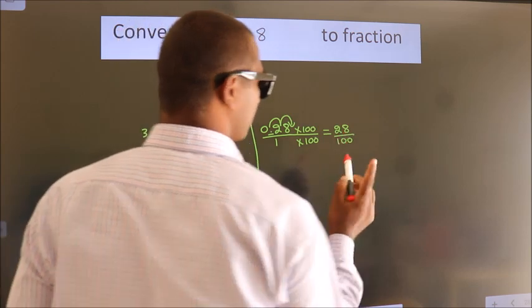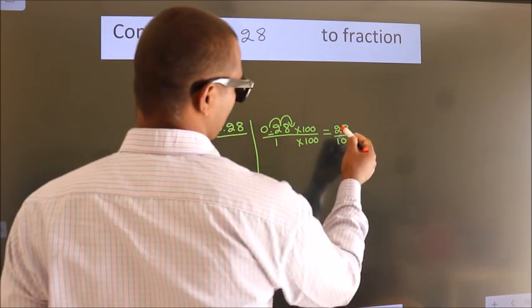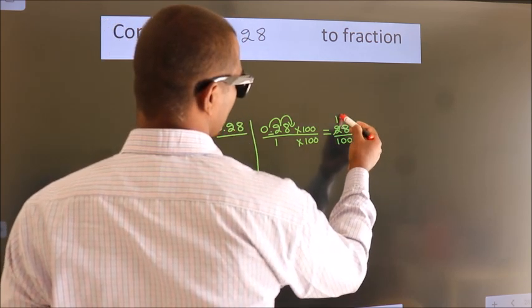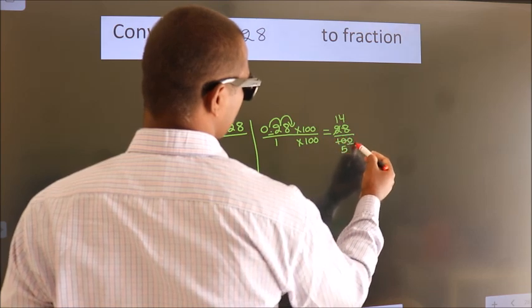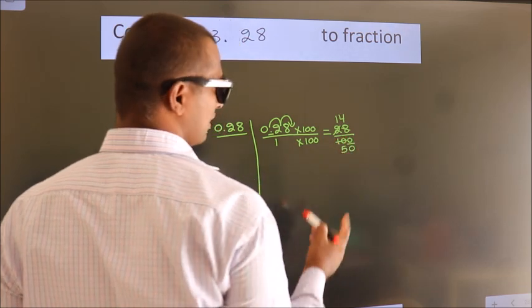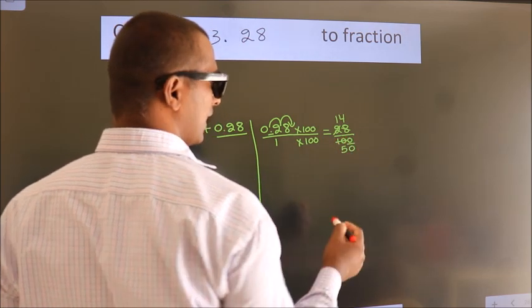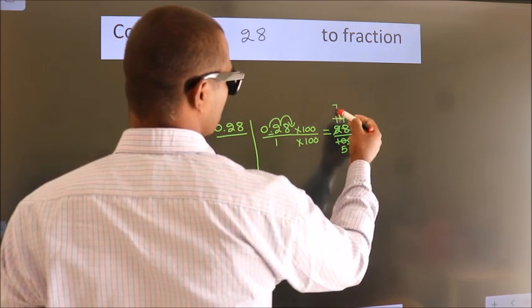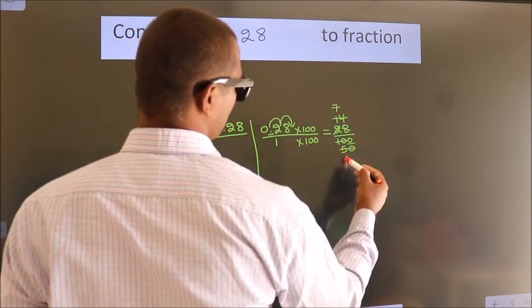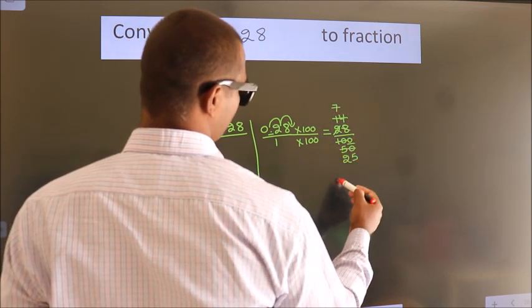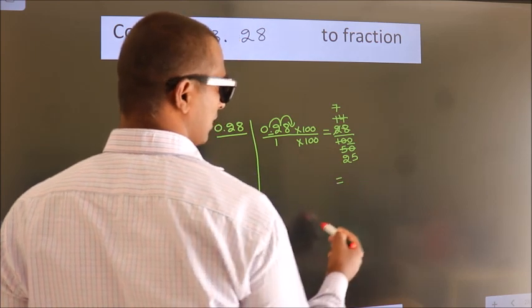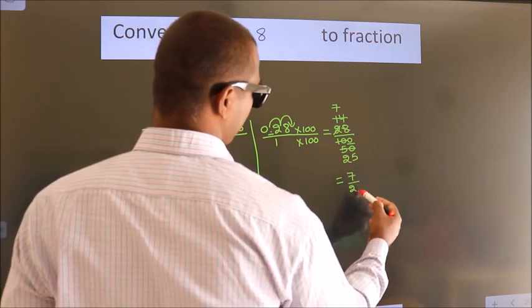Now I cancel with 2. 2 ones is 2, 2 fours is 8, 2 fives is 10. This 0 as it is down. I cancel with 2 again. 2 sevens is 14, 2 twenty-fives is 50. So the fraction we got is 7 by 25.